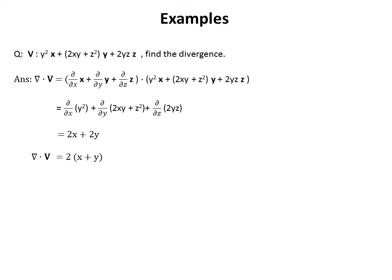Now, examples. We have a vector function V = y²x̂ + (2xy + z²)ŷ + 2yz·ẑ. We need to find the divergence. DEL·V = (∂/∂x)(y²) + (∂/∂y)(2xy + z²) + (∂/∂z)(2yz). This gives 0 + 2x + 2y. So the divergence of V equals 2(x + y).